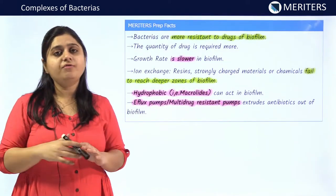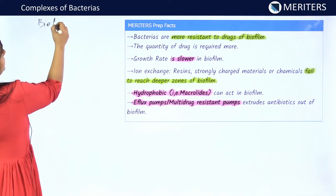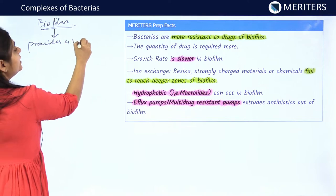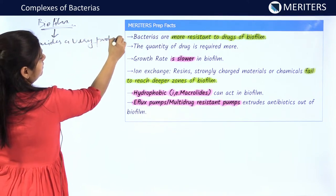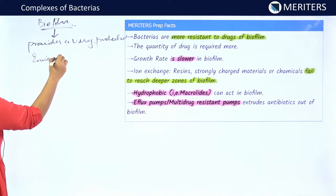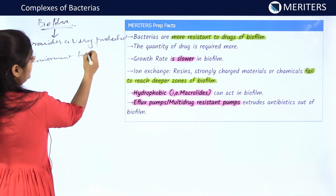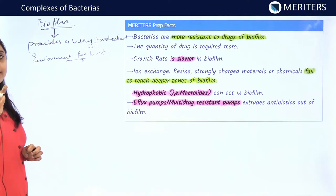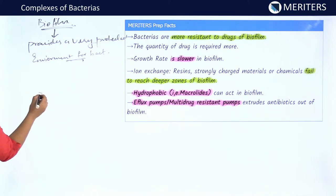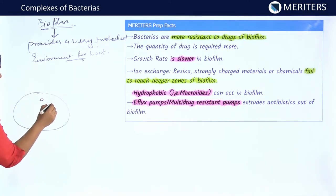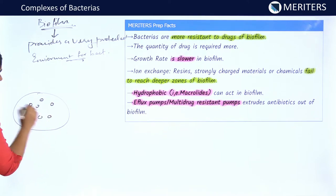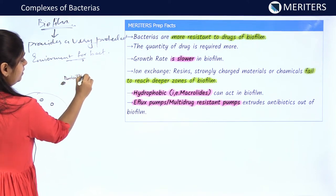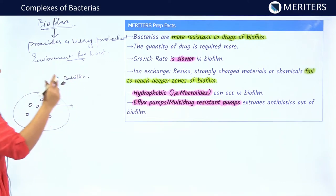Now let us see some very important functions of biofilm. Biofilm provides a very protected environment for the bacteria present inside it. For example, suppose the host has taken a medicine like penicillin. Inside the biofilm there are certain signaling molecules and many bacteria. When the host takes an antibiotic like penicillin, one of the bacteria inside the biofilm is signaled that some danger is present.